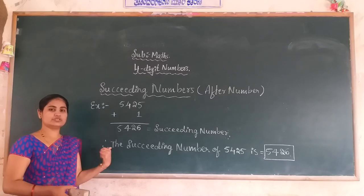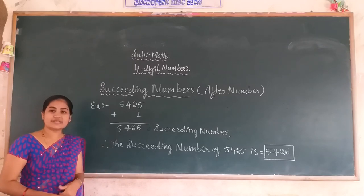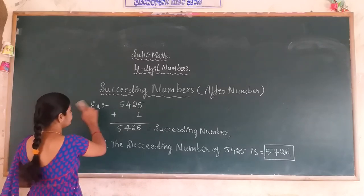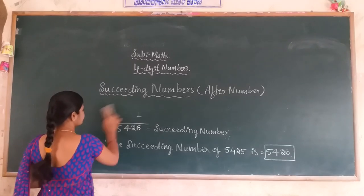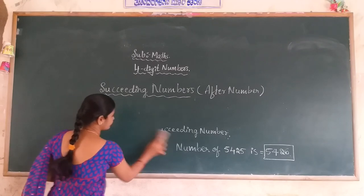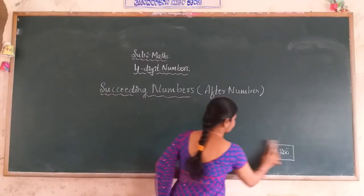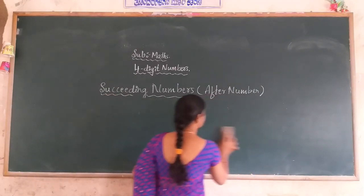Now we go to the preceding number. Let's take 4,465 as our next example.